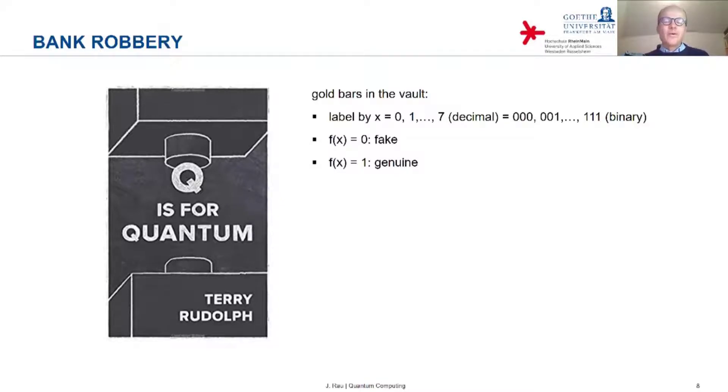Now, for the bars in a given vault, this function is either constant. So all of them are fake, and the value of the function is zero. Now, for all possible values of x, then the function is constant, or the function is balanced. And because in the second case, you have the same number of fake bars and the genuine bars, and this means that the function is balanced. So you have the same number of x's for which the value of the function is zero, as you have x's for which the value is one. And then this is the generalization of this notion of a balanced function. It means that the two possible values of the function occur with equal frequency.